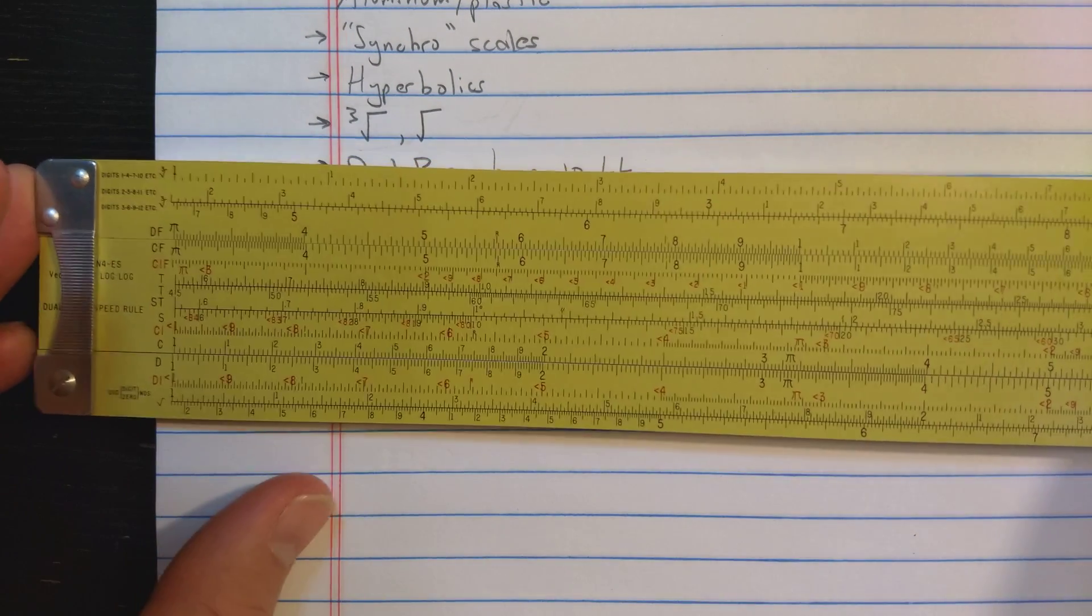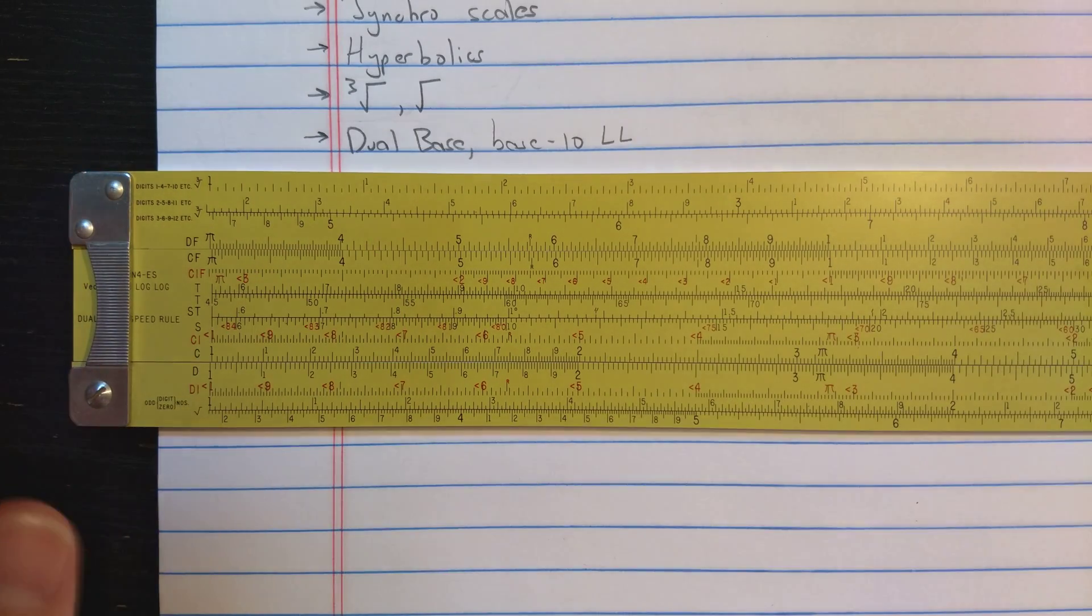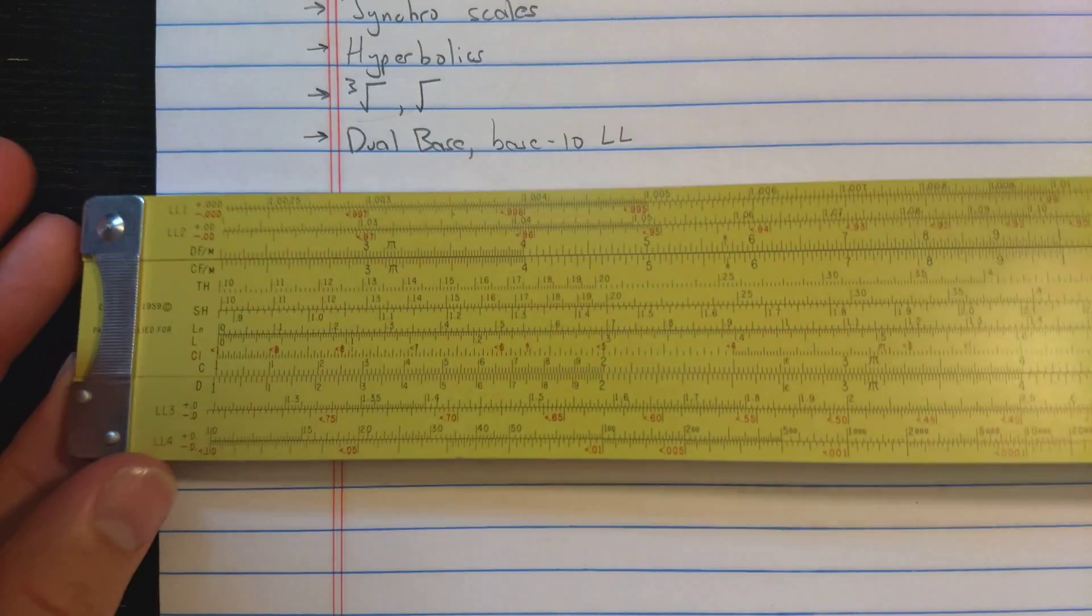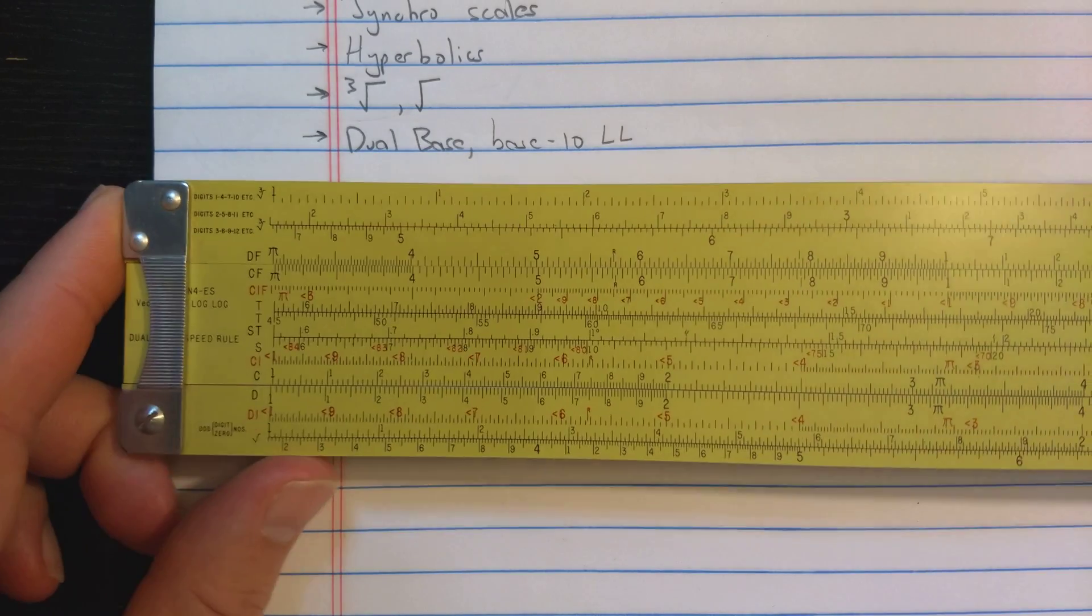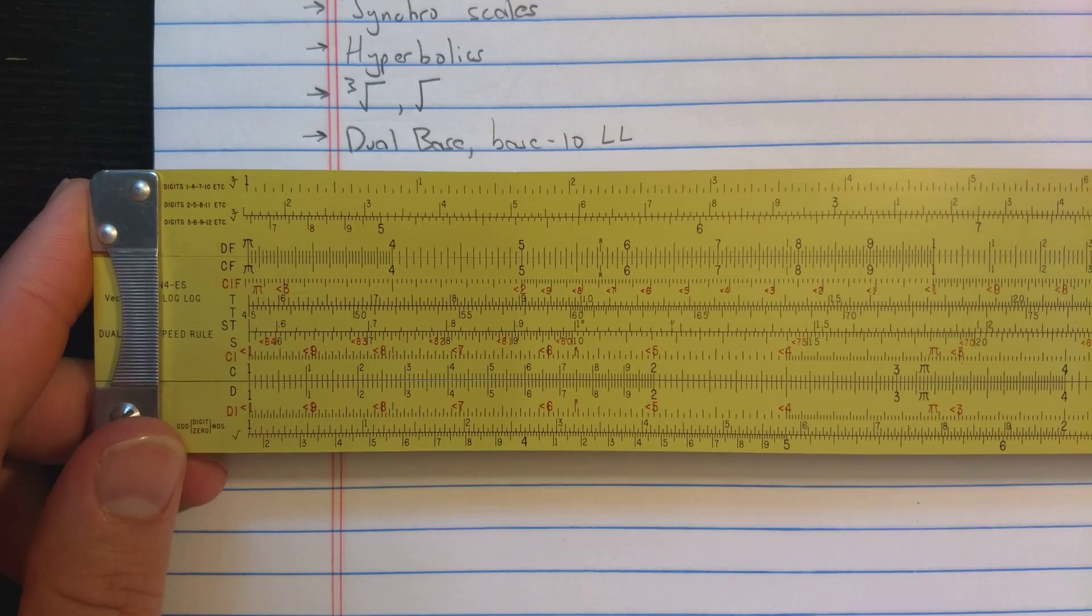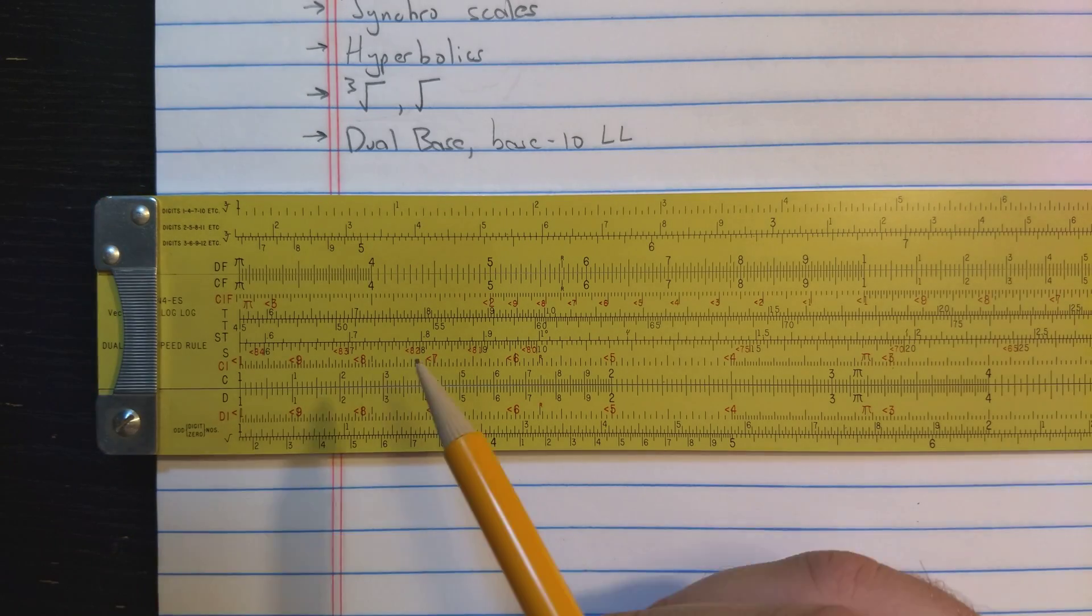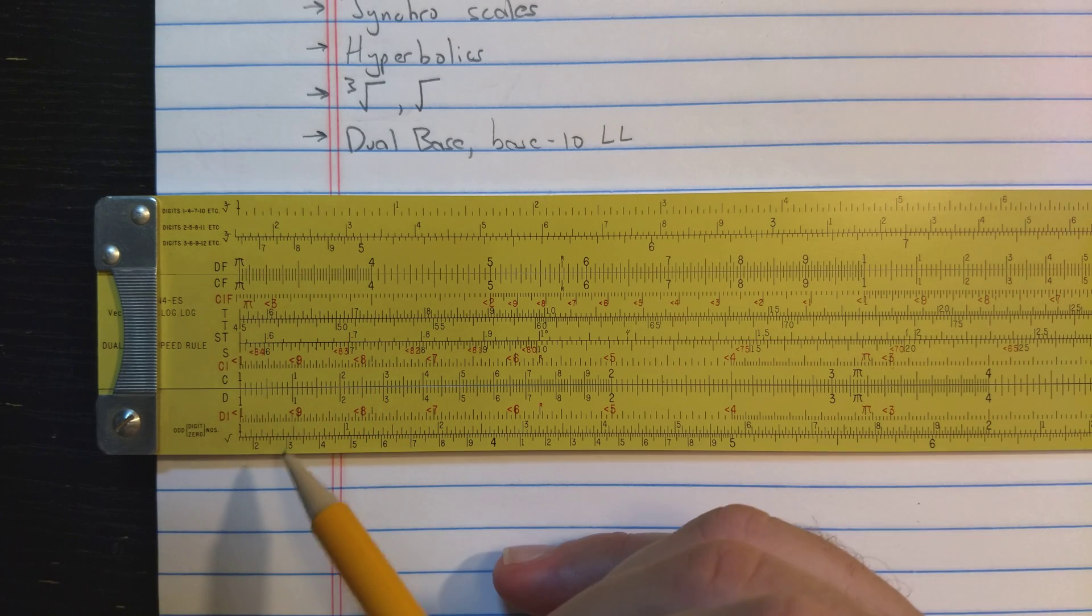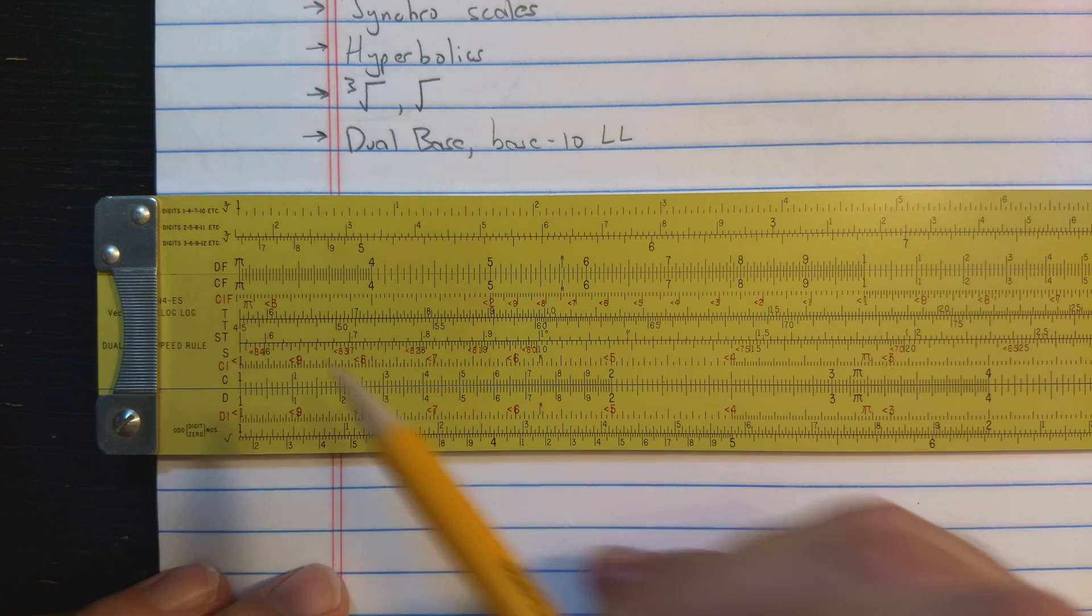But, what's most interesting about this slide rule, well there's a couple things. One thing which is interesting is that there are no A and B or K scales anywhere on the slide rule. So this makes it a little different even than a VersaLog or a Decelan slide rule. Everything, all your cubes, cube roots, squares, square roots are done with these square root scales. Those are the same as your R scales on the VersaLog, can be used for squares and square roots.